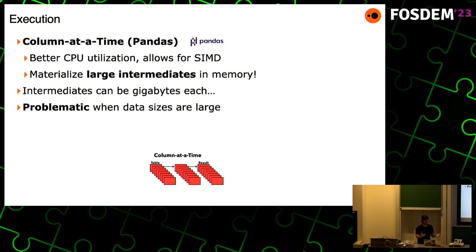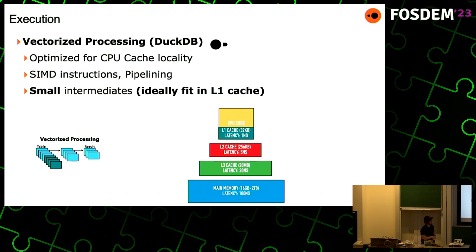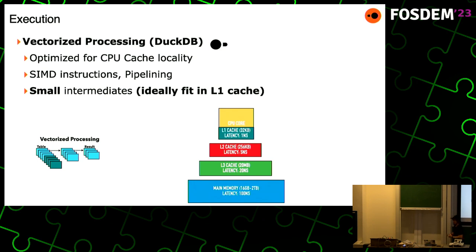DuckDB uses vectorized query processing — a technique developed by Peter Boncz — where you process batches of a column at a time. It's optimized for CPU cache locality, you can do SIMD instructions and pipelining, and the intermediates actually fit in L1 cache. You're paying a latency of one nanosecond to access your data throughout your query plan, instead of the 100 nanoseconds of main memory. It seems like a small difference, but when you're constantly executing this, it really becomes a bottleneck.